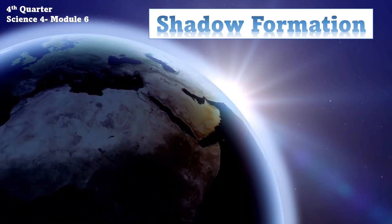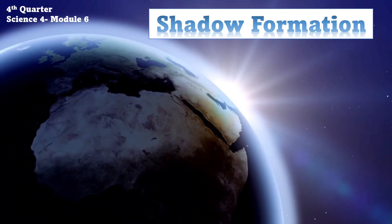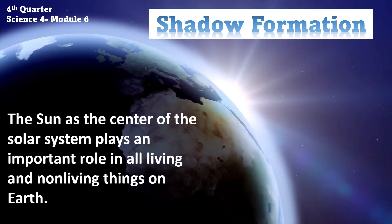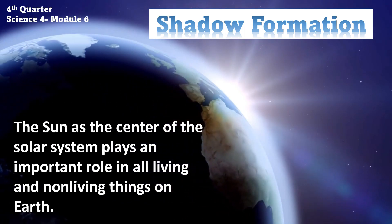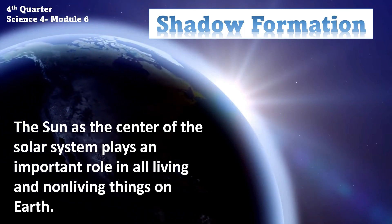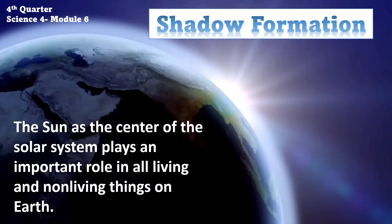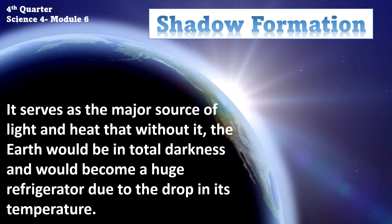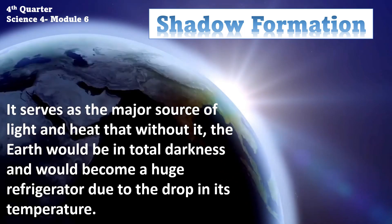Fourth quarter. Signs for Module 6, Shadow Formation. The sun is the center of the solar system and plays an important role in all living and non-living things on Earth. It serves as the major source of light and heat — without it, the Earth would be in total darkness and would become a huge refrigerator due to the drop in its temperature.